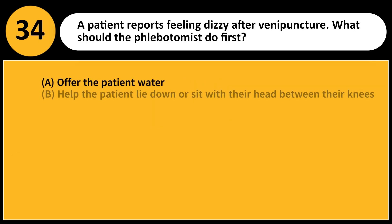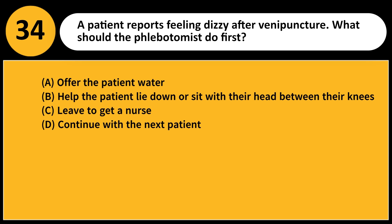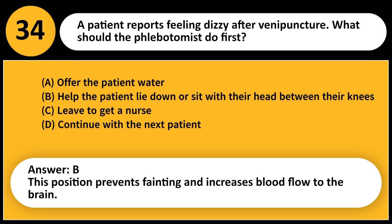A patient reports feeling dizzy after venipuncture. What should the phlebotomist do first? A. Offer the patient water. B. Help the patient lie down or sit with their head between their knees. C. Leave to get a nurse. D. Continue with the next patient. Answer: B. This position prevents fainting and increases blood flow to the brain.